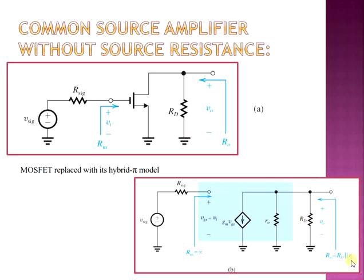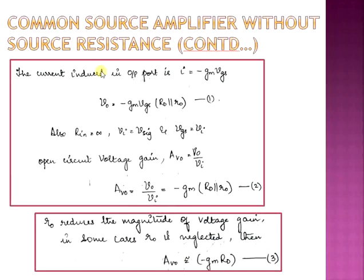The resistance R0 is a parallel combination of Rd and small r0. We need to find the characteristic parameters: the input resistance, the open circuit voltage gain, and the overall gain of the common source amplifier.